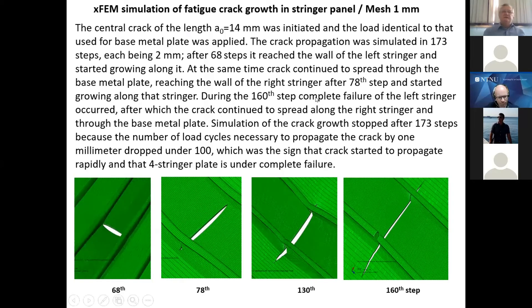and then we got some very interesting results. Namely, you can see here that after 68 step of fatigue crack growth, which is approximately one millimeter per step, the crack reaches these two panels, left and right of it. Then it goes through the panel, but not only through the base panel, also it goes through the stringer. You can see that after 78 step, it is partly already through the stringer, and then after 130th step, it is almost through the stringers, both left and right. And after 160th step, some asymmetry appeared, but anyhow,